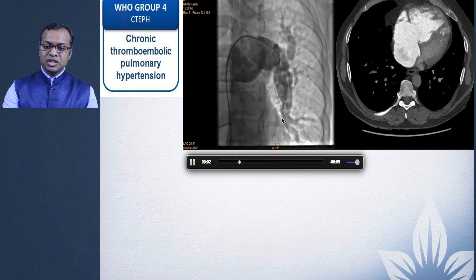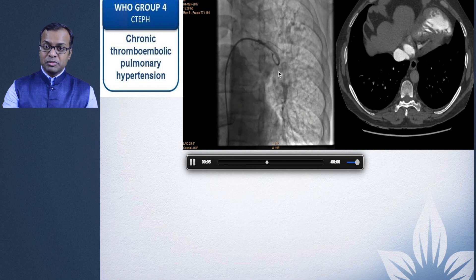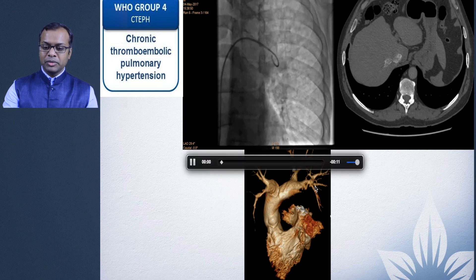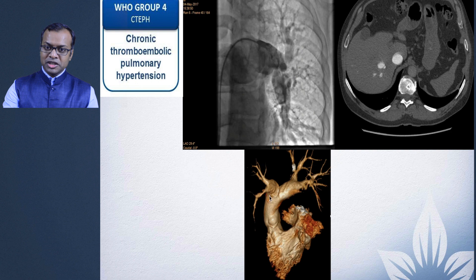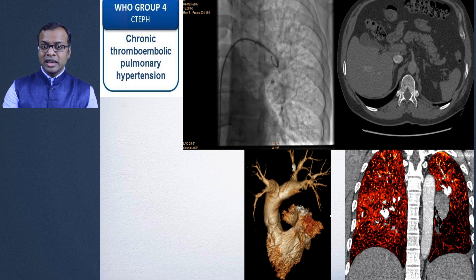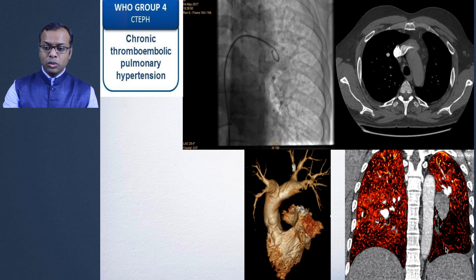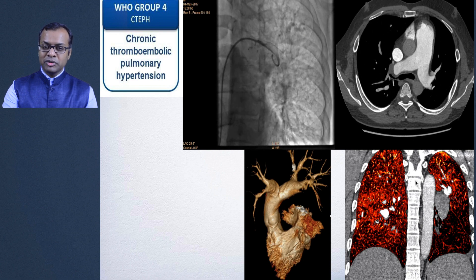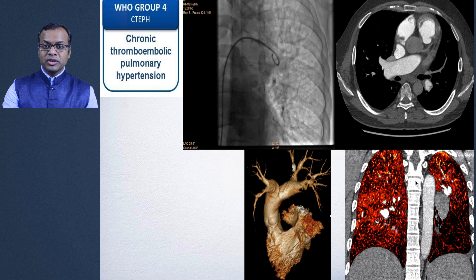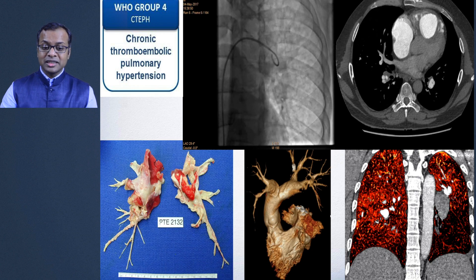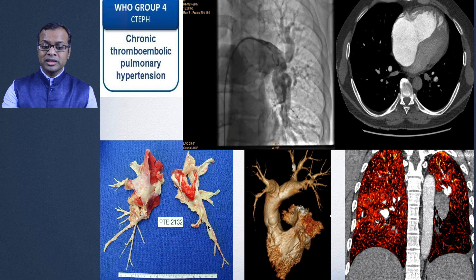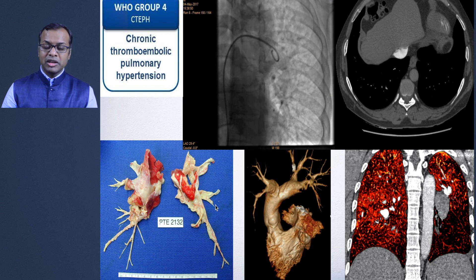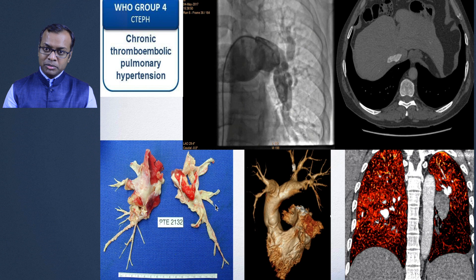On catheter angiography of the same patient, areas of webs and narrowing are nicely demonstrated on 3D MPR views. Dual-energy CT shows reduced perfusion in the left lower lobe with patchy areas of reduced perfusion in the other lung, consistent with CTEPH. Management is pulmonary endarterectomy — the clots are removed from the pulmonary artery and patients do extremely well with a significant drop in pulmonary pressures.